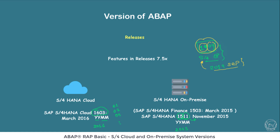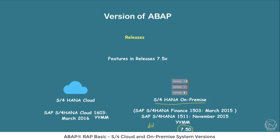The ABAP version was 7.50 in the first S4HANA on-premise system. The series 7.5X starts with 7.50, and this was the first ABAP update in our S4HANA on-premise system — released in March 2015 with only the Finance module, and with other modules in November 2015.